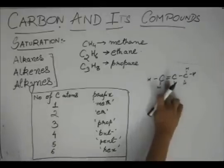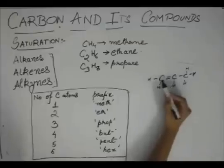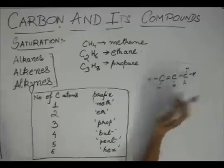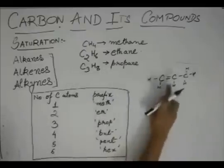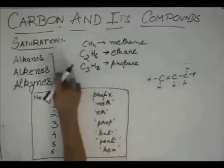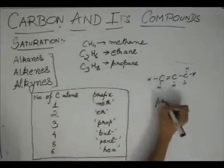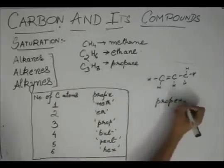Like this. So, it has one double bond and three carbon atoms. So, the prefix for three is prop. And since it has a double bond, it is an alkene. So, the name will be PROPENE.